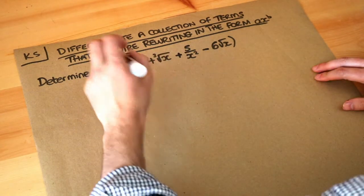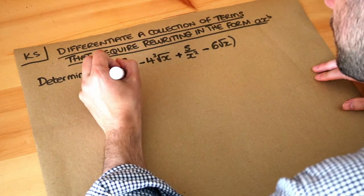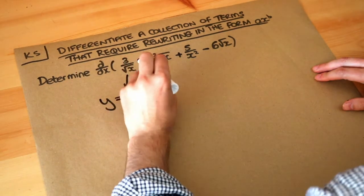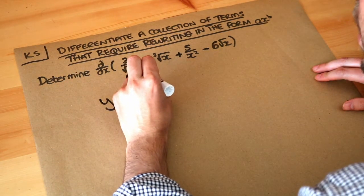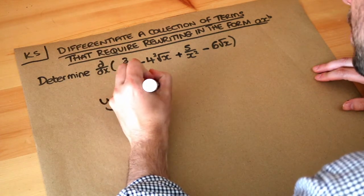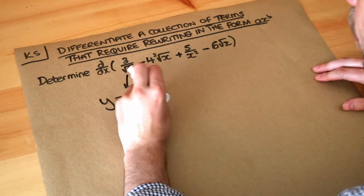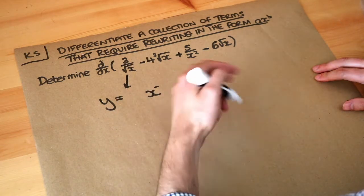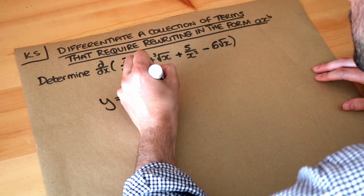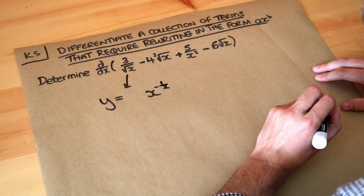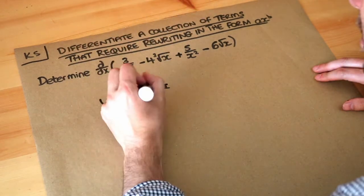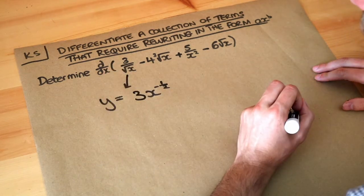So if we take 3 over root X, for example — if we just call this Y for the moment — remember when X is in the denominator it's going to be a negative power, so it's going to be X to the minus something. And when you have root X, that's the same as X to the half. So therefore this is going to be X to the minus half, and because it's 3 lots of 1 over root X, it's going to be 3X to the minus half.